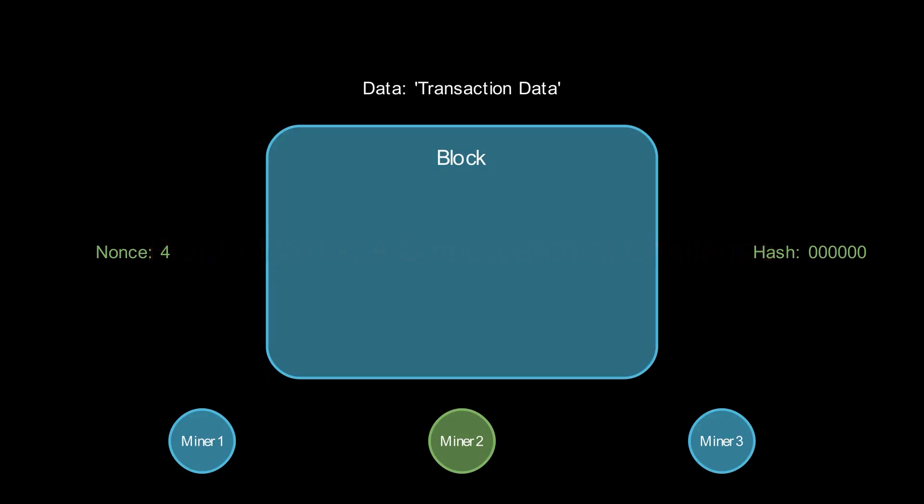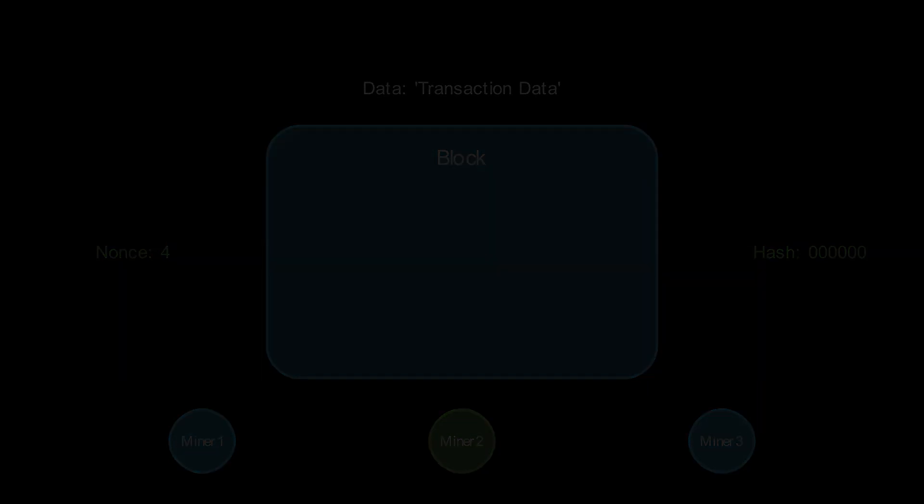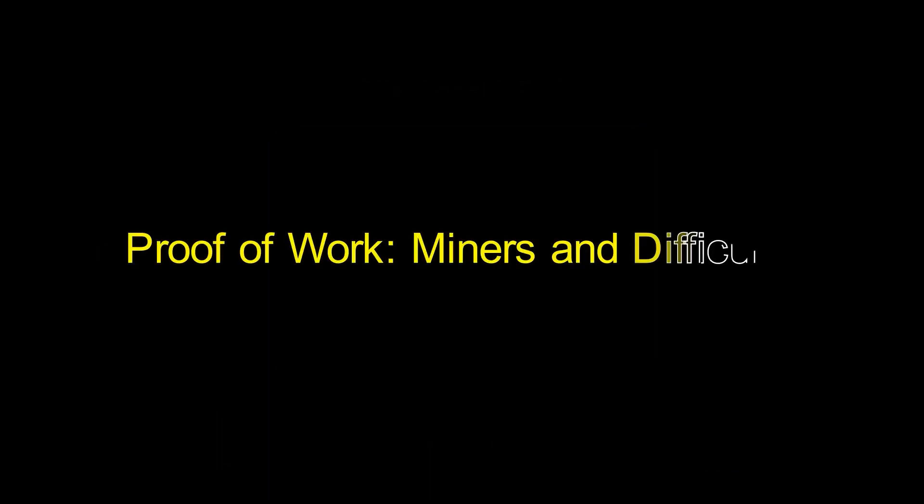For n leading zeros, the probability of finding a valid hash is 1 over 2 raised to the n. Cynthia Dwork and Moni Naor first proposed this concept of computational effort as a proof.